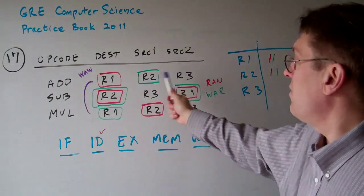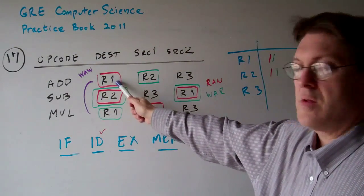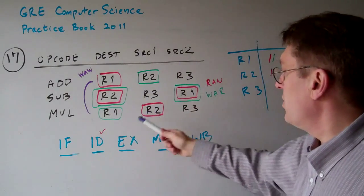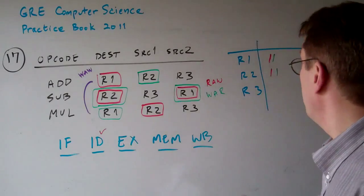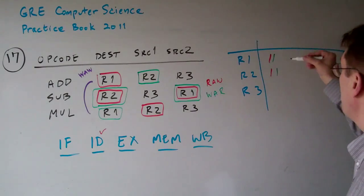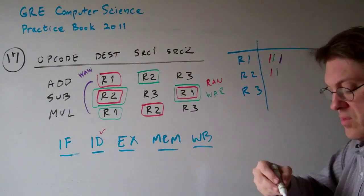Here, we have this instruction writing to register 1. Then we do some stuff. We have this instruction writing to register 1. So register 1 also has a write-after-write hazard.